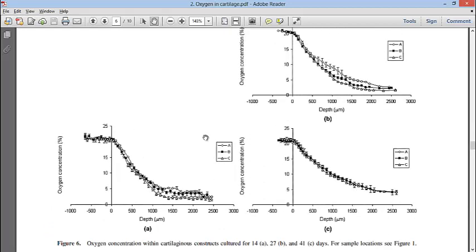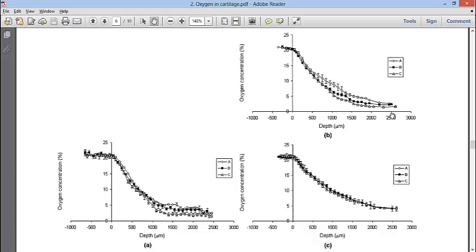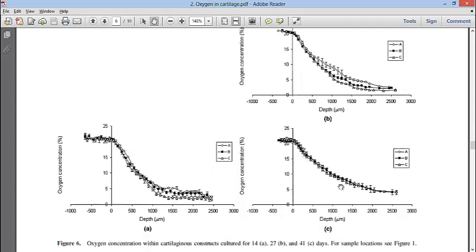They studied the oxygen diffusion and they measured the oxygen concentration over the course of 14, 27, and 41 days. Oxygen was able to reach the lower ends of the depth of the construct. Each one, they all pretty much look about the same, although the 41 days are starting to look a little more linear, whereas the very early 14 days is very exponential.